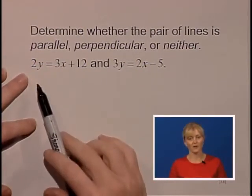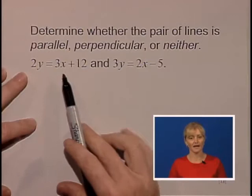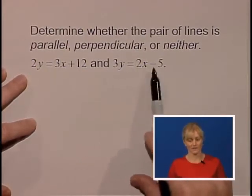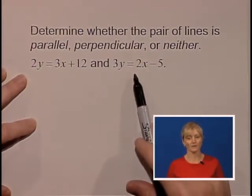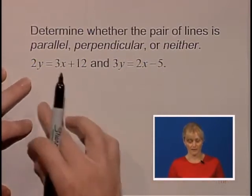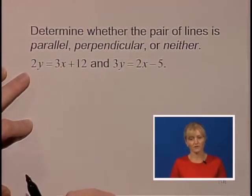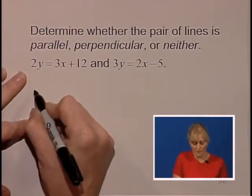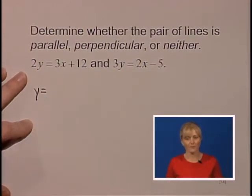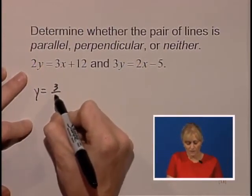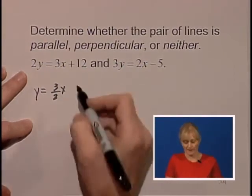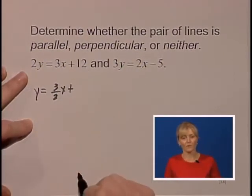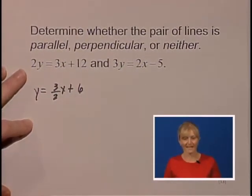So for our first equation, 2y equals 3x plus 12. We also have a second equation, 3y equals 2x minus 5. We'd like to get y by itself, so let's divide this first one through by 2. On both sides we'll have 3 halves x, and we'll also divide 12 by 2 and get 6.